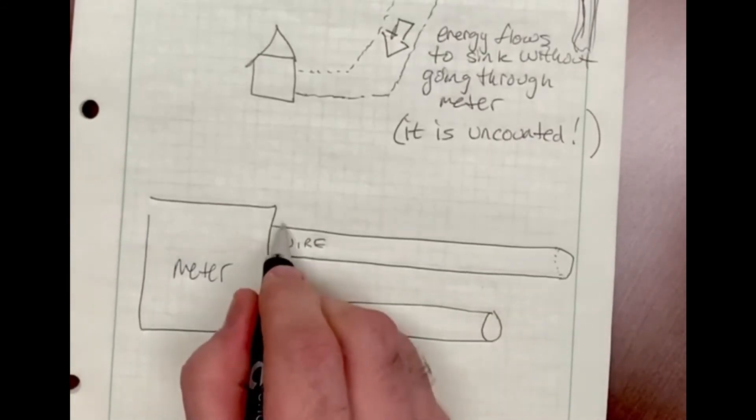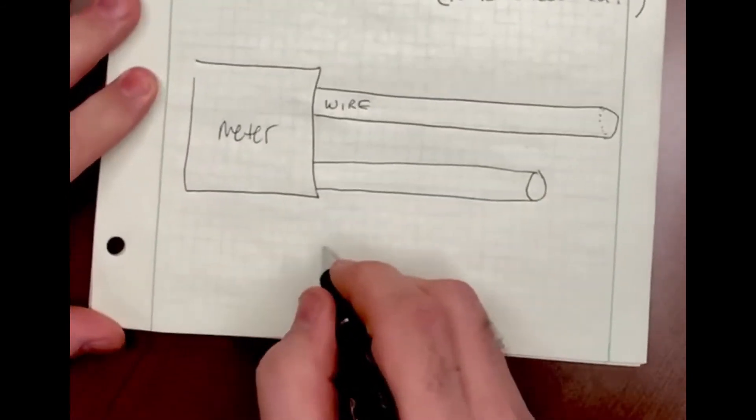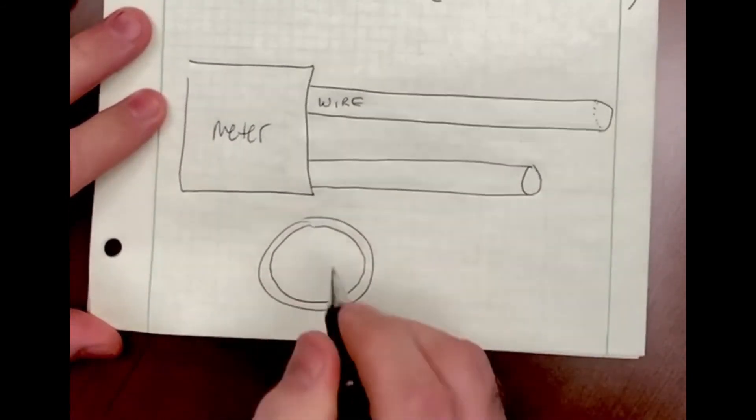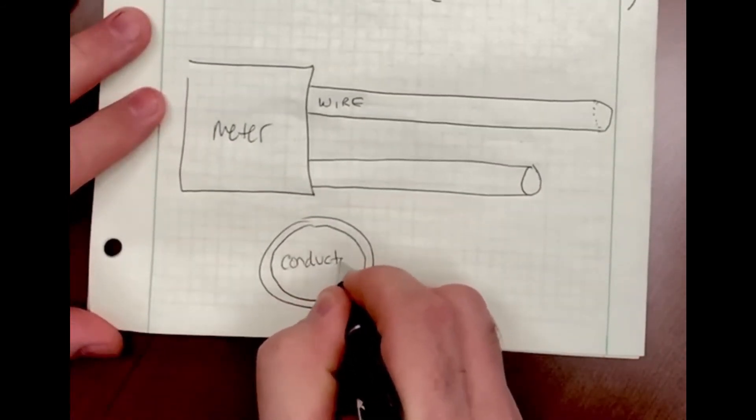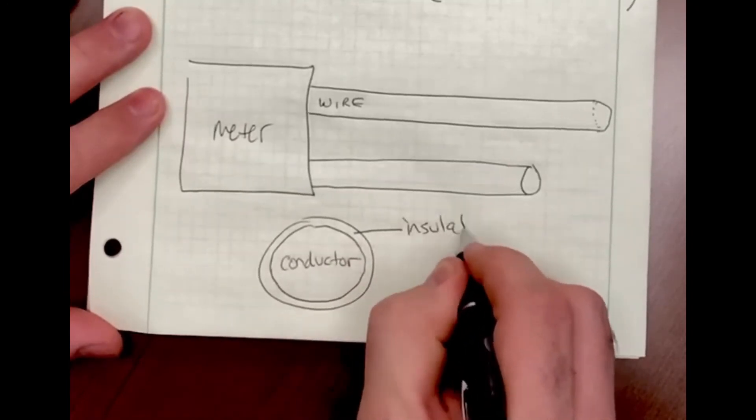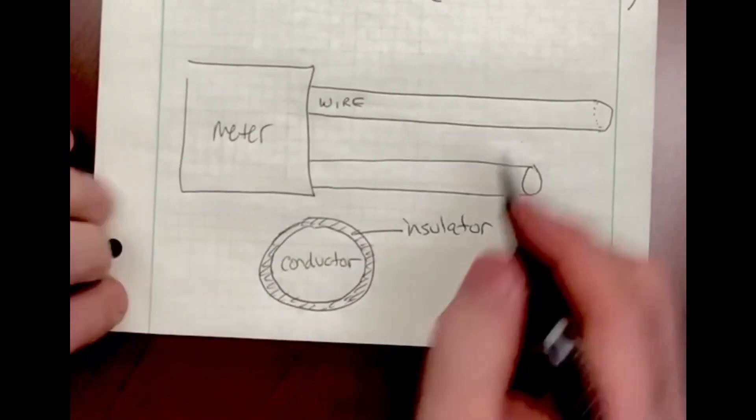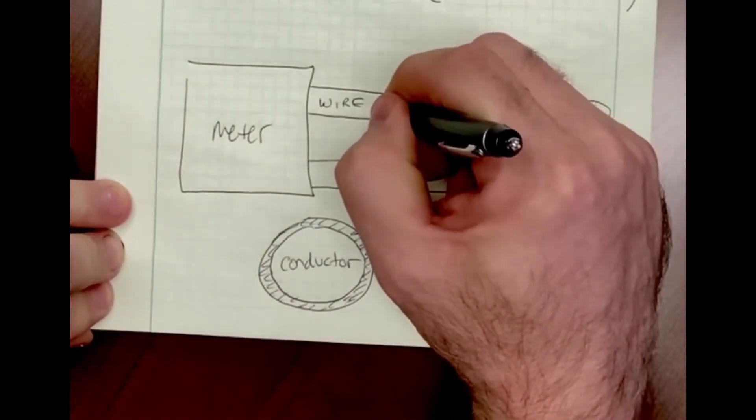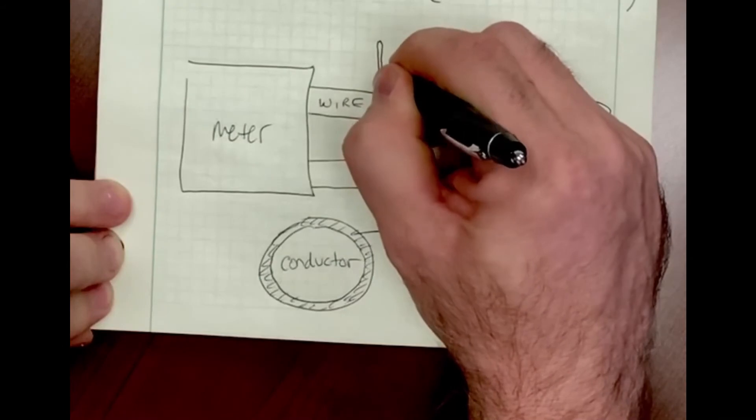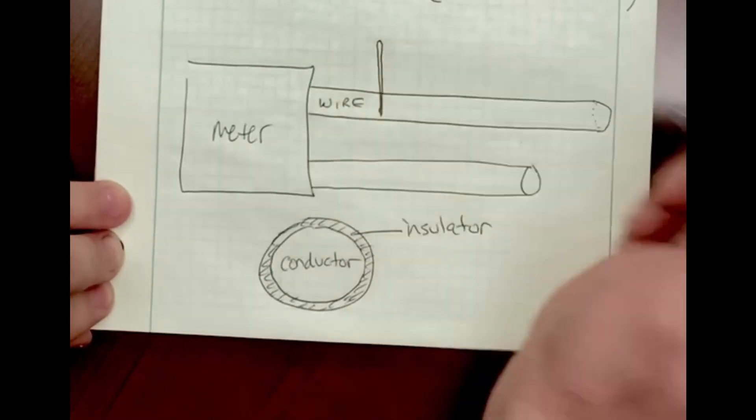I'm going to draw my two wires coming in and out of my meter now as cylinders. If I were to look at a cross-section of each of those conductors, I would have a conductive core surrounded by an insulating cover, usually a plastic type of cover.